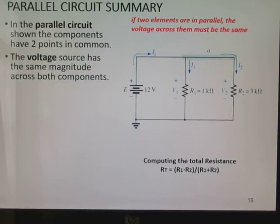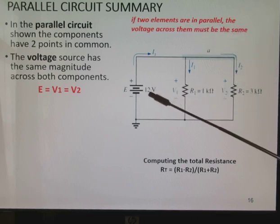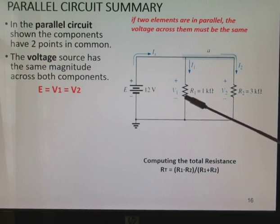Let's summarize what we've learned so far. In a parallel circuit, we have two places in common. One thing we have to realize is that the voltage across here is the same. So 12 volts here is the source. It equals V1 equals V2. So R1 has 12 volts across it. So does R2.